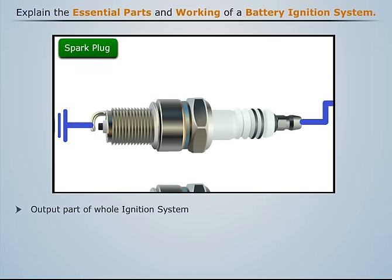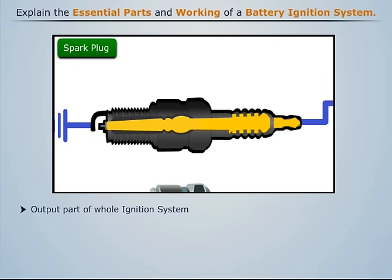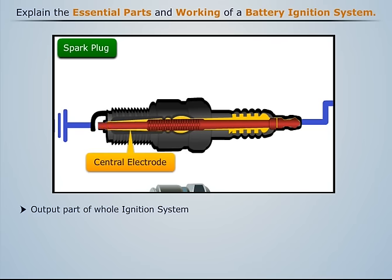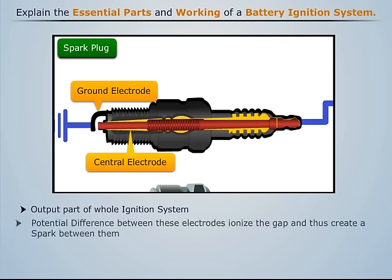The spark plug is the output part of the whole ignition system. It consists of two electrodes — one attached to the high-tension current-carrying wires and the other grounded. The potential difference created between these electrodes ionizes the gap present between them, and thus a spark is generated which ignites the combustible mixture.